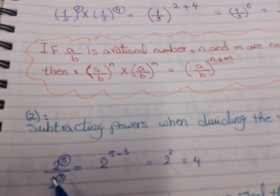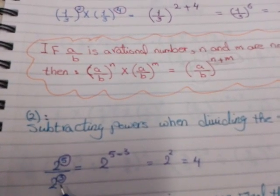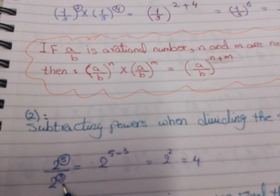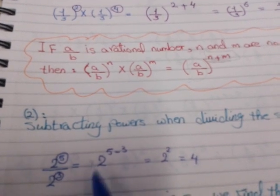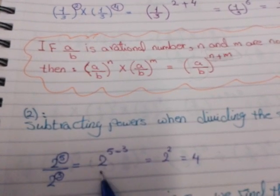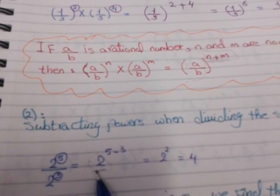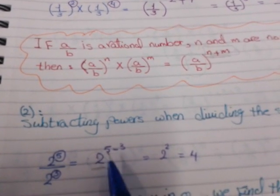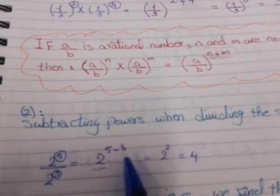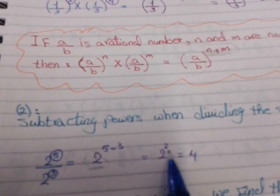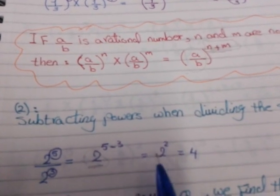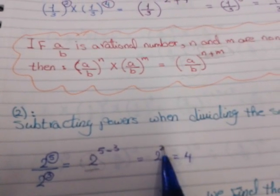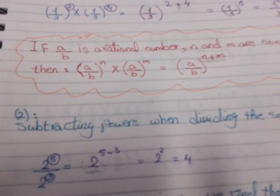For example: 2⁵ over 2³. We take the base 2, then subtract the powers: 5 minus 3 equals 2. So 2² equals 4.